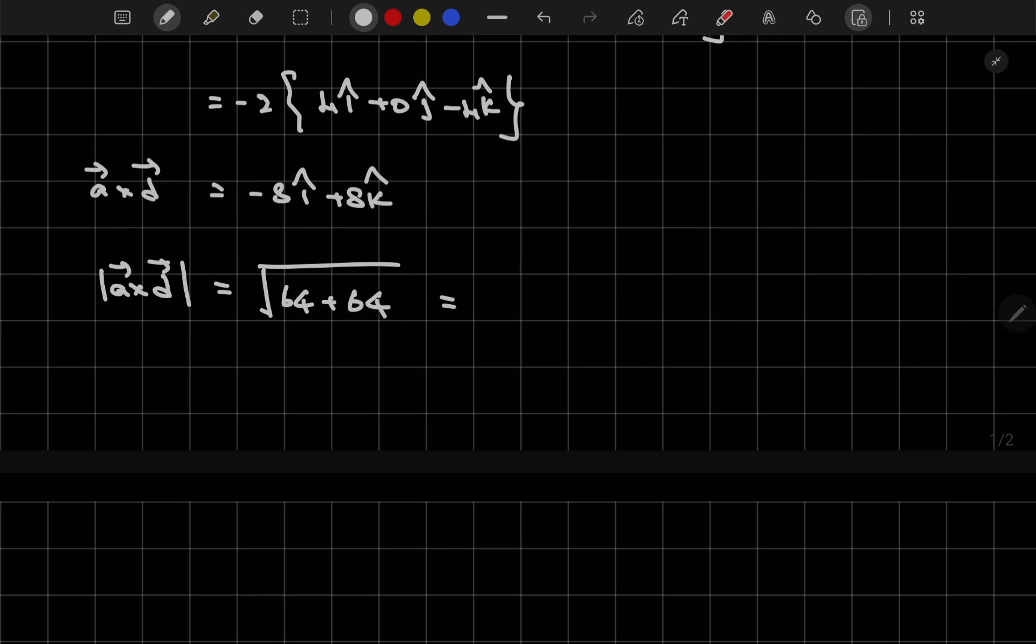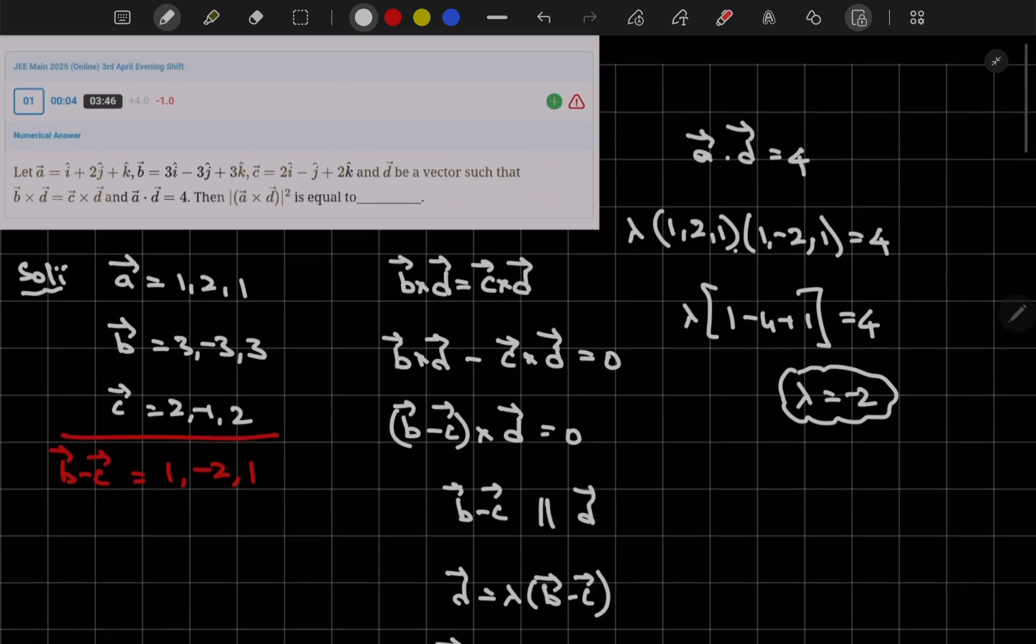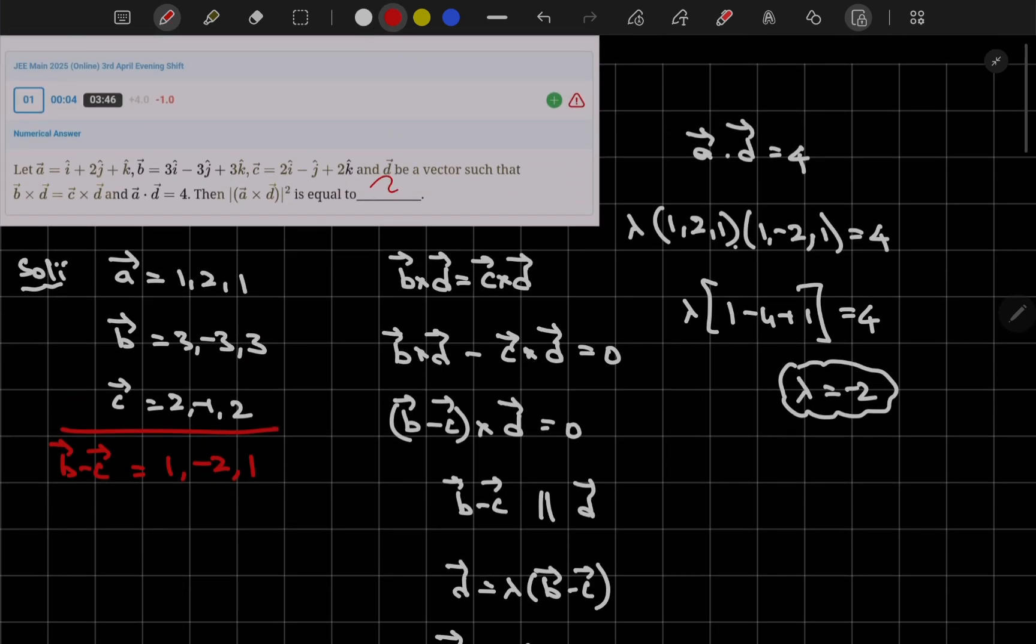If I try to find magnitude, magnitude of A cross D value is root of 64 plus 64. Which is equal to root of 128. But in the question he is asking whole square hence my answer is 128. I hope you understand this question. If you understand this question please do like, share and subscribe.